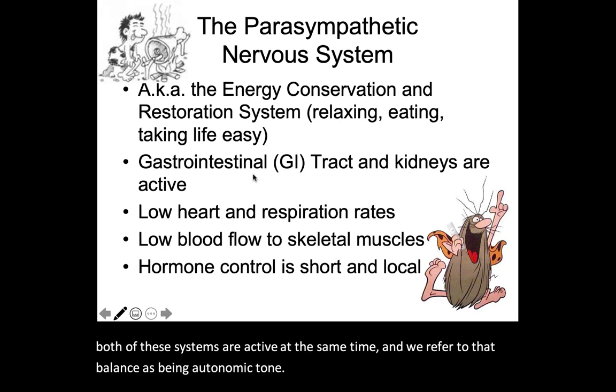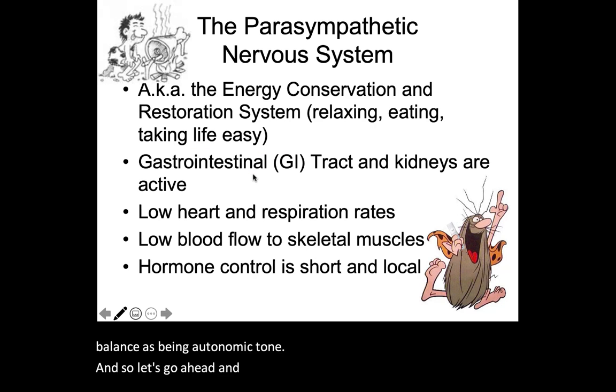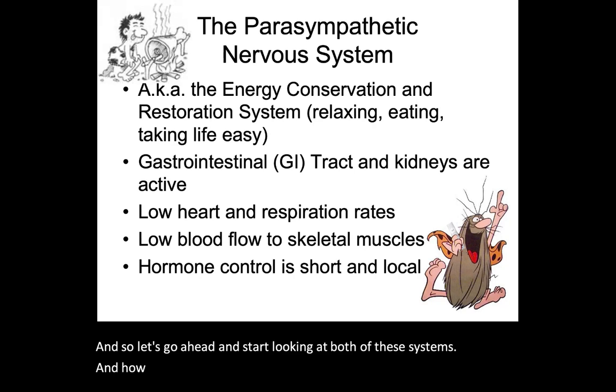Autonomic tone is the balance between the parasympathetic and the sympathetic nervous system. At no point is the parasympathetic 100% in charge with the sympathetic shut down, and vice versa. There is always a balance of activity between the two — one may be in charge while the other takes a back seat, but both systems are active at the same time. That balance is what we refer to as autonomic tone.